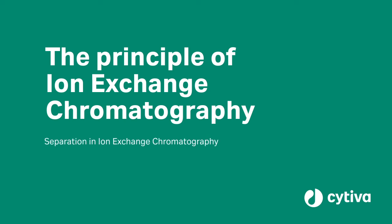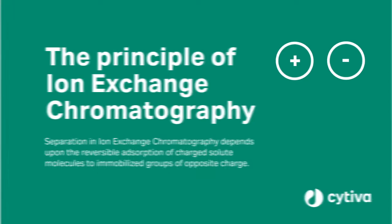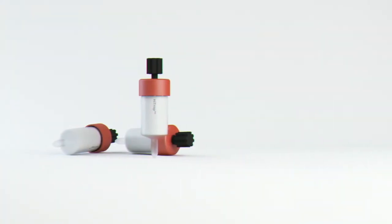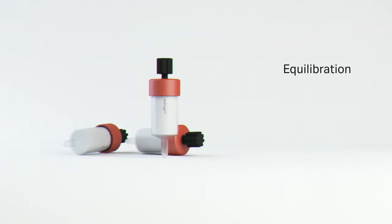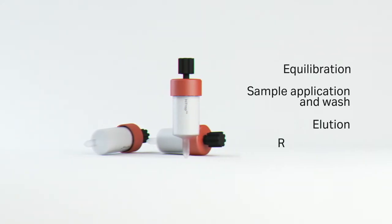Separation in ion exchange chromatography depends upon the reversible adsorption of charged solute molecules to immobilized groups of opposite charge. Most ion exchange experiments are performed in four main stages: equilibration, sample application and wash, elution, and regeneration.